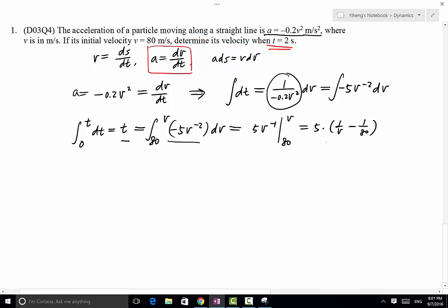We do a little bit of transformation. So we have t/5 equals 1/v - 1/80. t/5 + 1/80 equals 1/v. This equals (16t + 1)/80. Therefore, as a result, v(t) equals 80/(16t + 1).